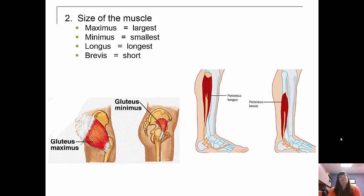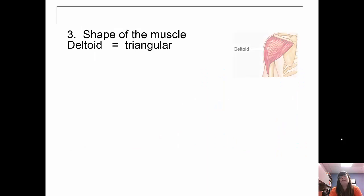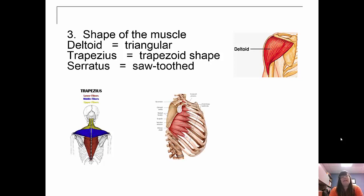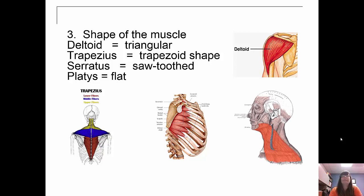Muscles can also be named by size: maximus is the largest, minimus the smallest — for example, the gluteus maximus and gluteus minimus. Longus is the longest and brevis is short — for example, the peroneus longus and peroneus brevis, also called the fibularis longus and fibularis brevis. They can also be named by shape: deltoid is triangular, trapezius is trapezoid-shaped, serratus is sawtoothed, and platys means flat, so your platysma in your neck is a flat muscle.